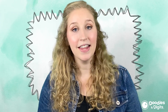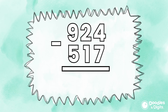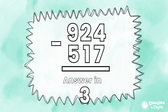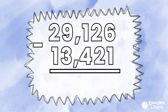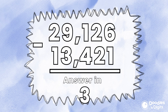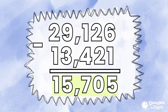Now let's see if you can do a couple subtraction problems on your own. 924 minus 517 — the answer is 407. 29,126 minus 13,421 — remember you can pause if you need more time — the answer is 15,705.